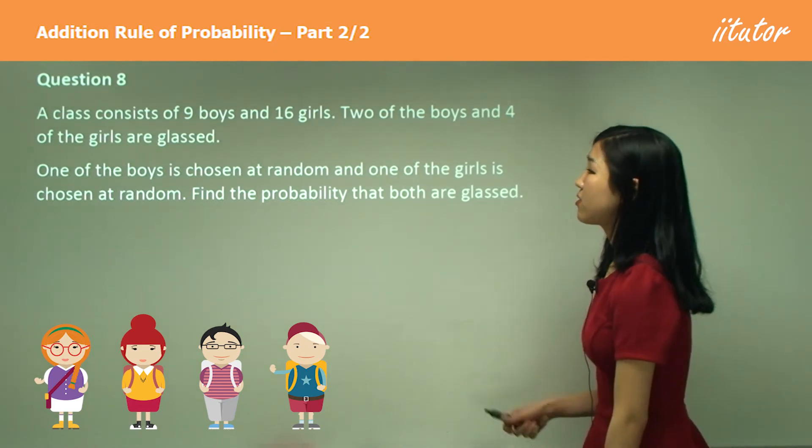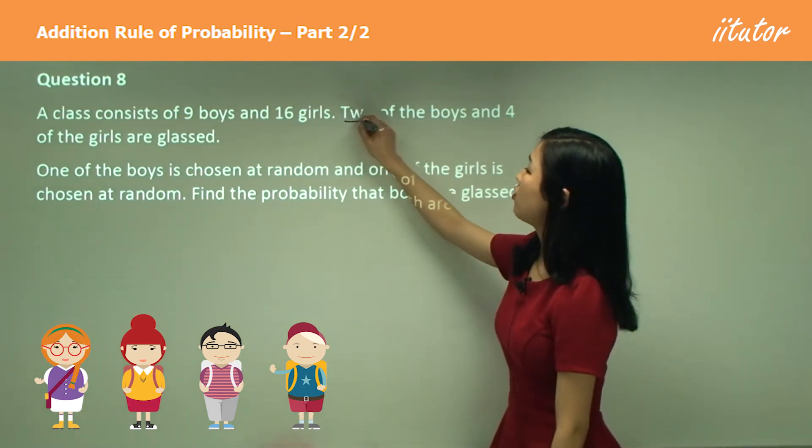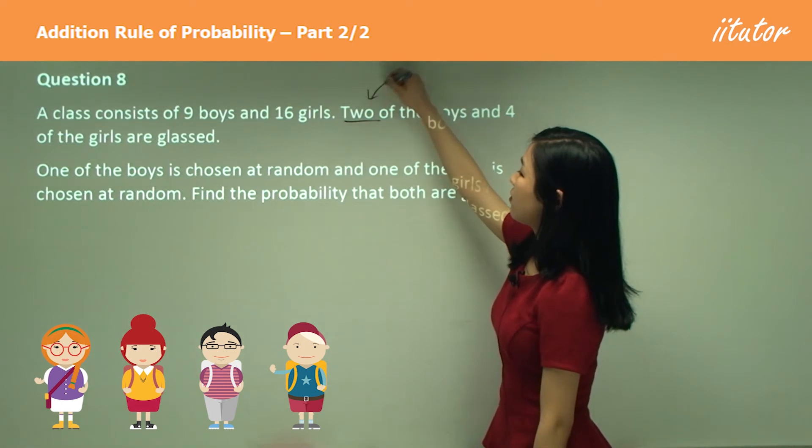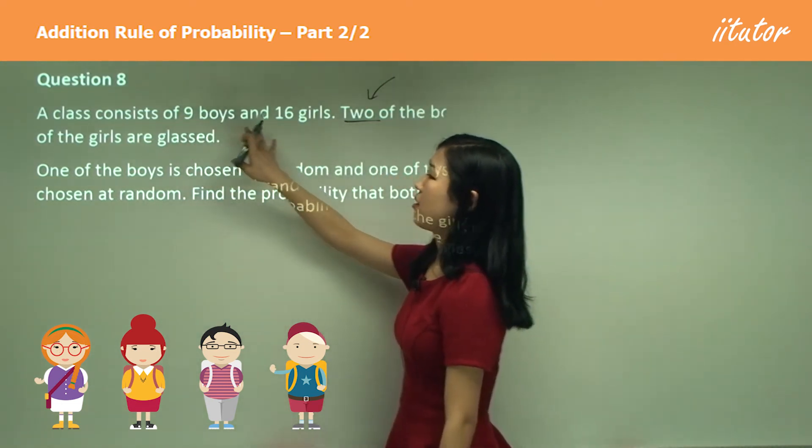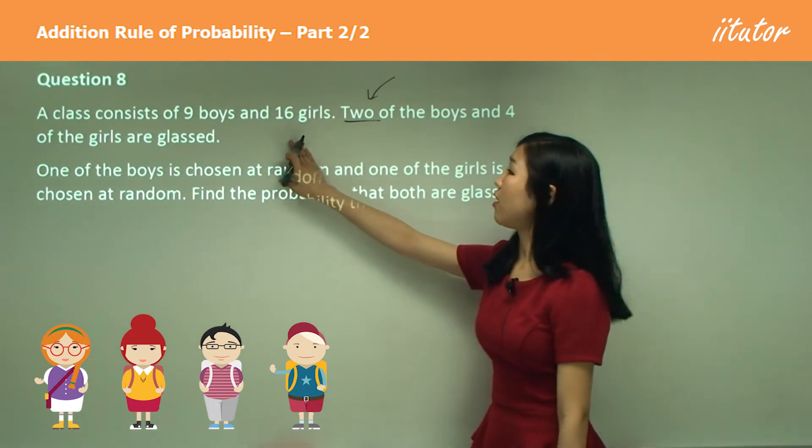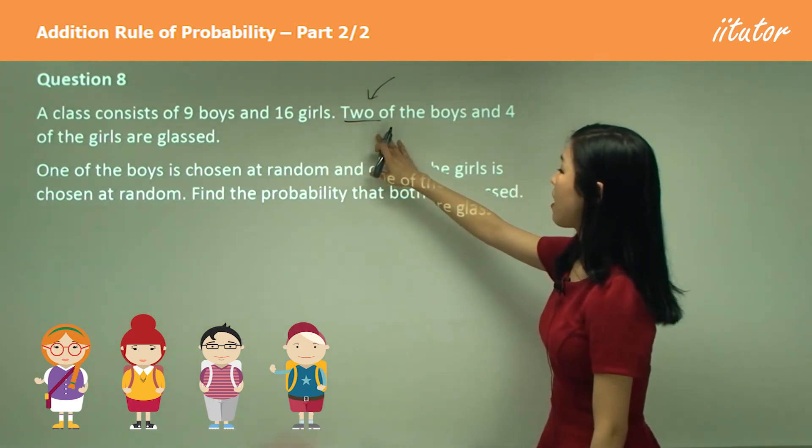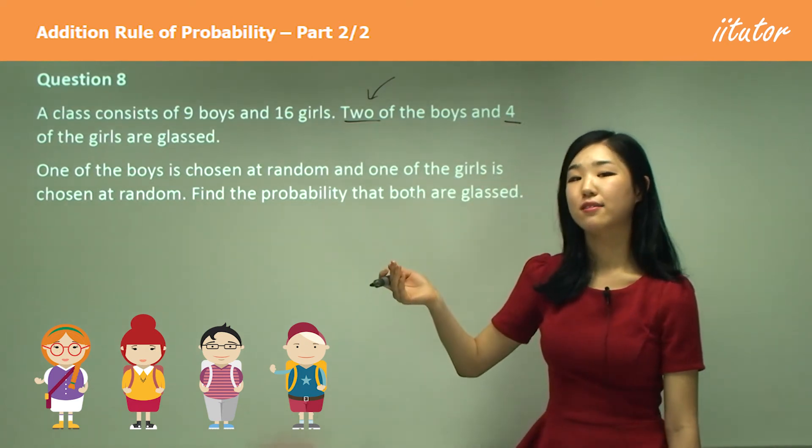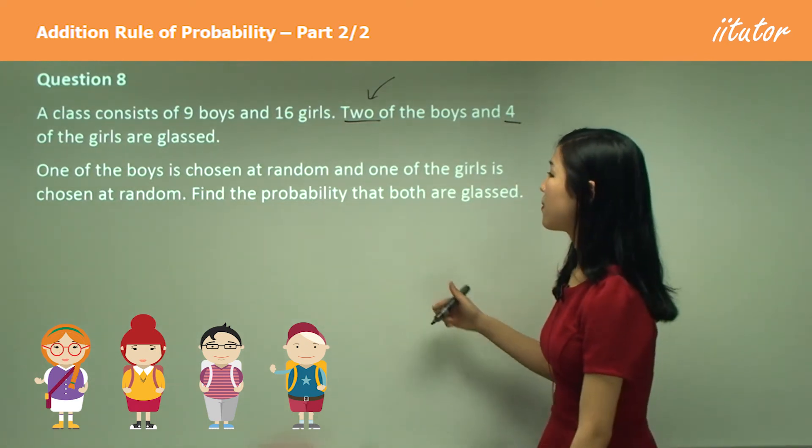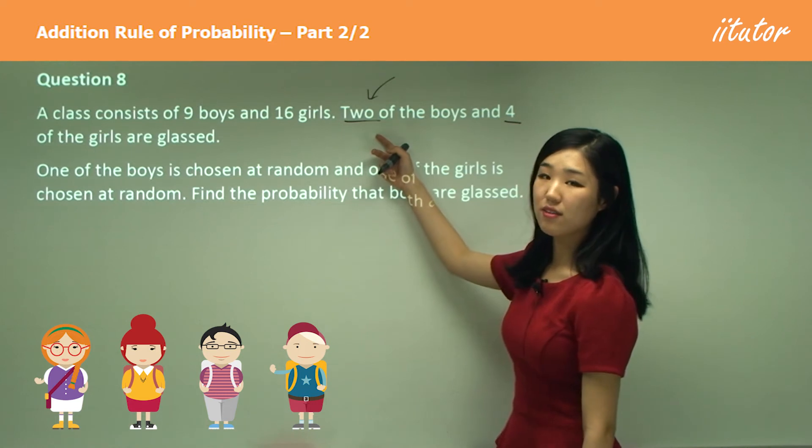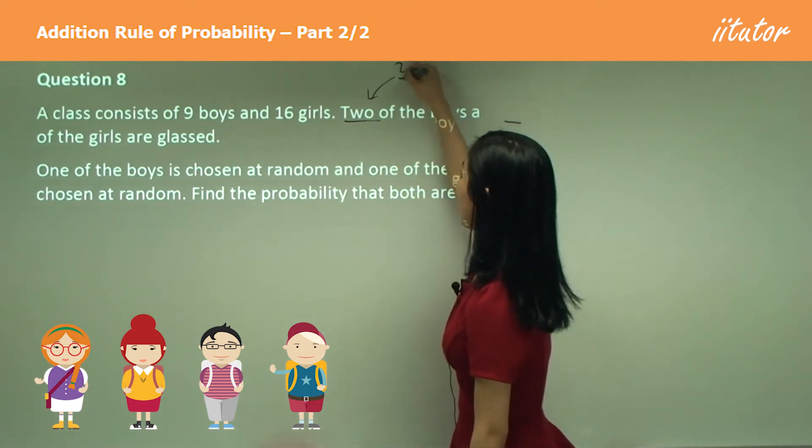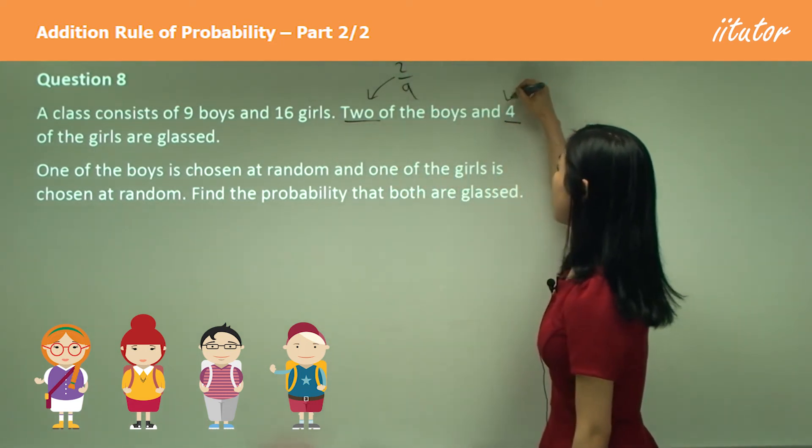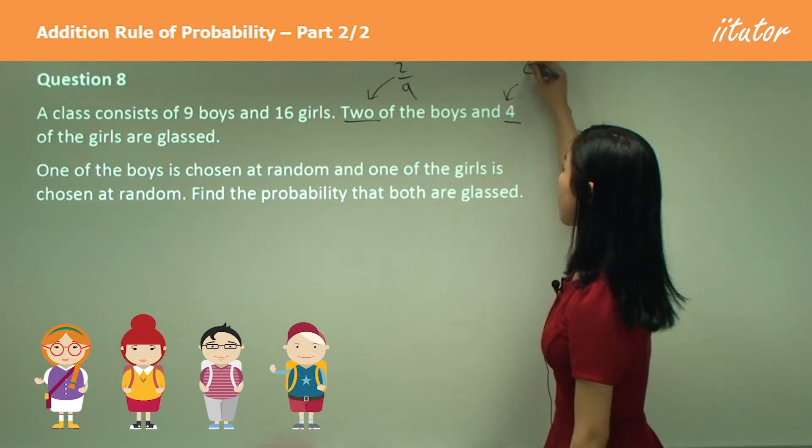Okay, they give us the probability that two of the boys, so if there's nine boys and 16 girls, two of the boys are glassed and four of the girls are glassed. So the probability that the boy is glassed is two out of nine and the probability that the girl is glassed is four out of 16.